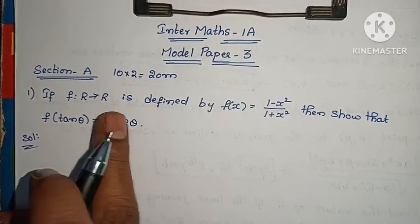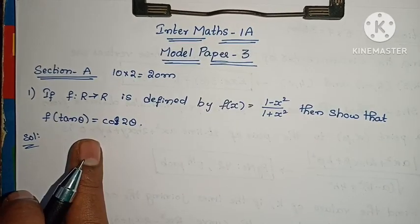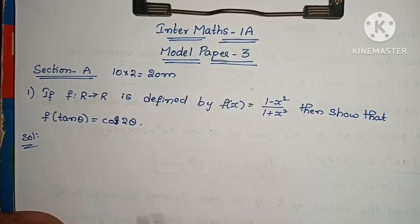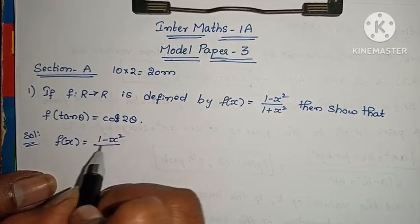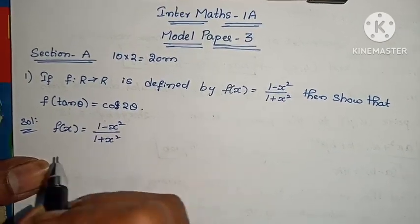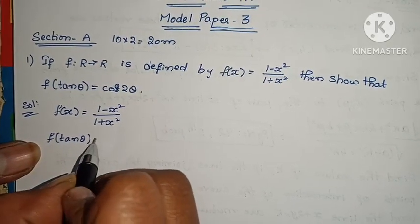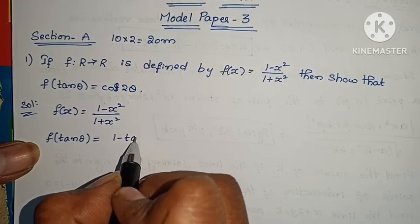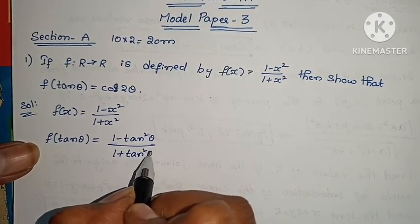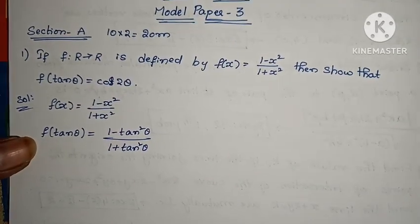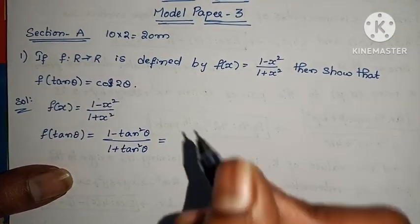If f maps R to R is defined by f(x) = (1 - x²)/(1 + x²), then show that f(tan θ) = cos 2θ. f(x) = (1 - x²)/(1 + x²). Now, f(tan θ) = (1 - tan²θ)/(1 + tan²θ). We already know the cos 2θ formula, so that equals cos 2θ.